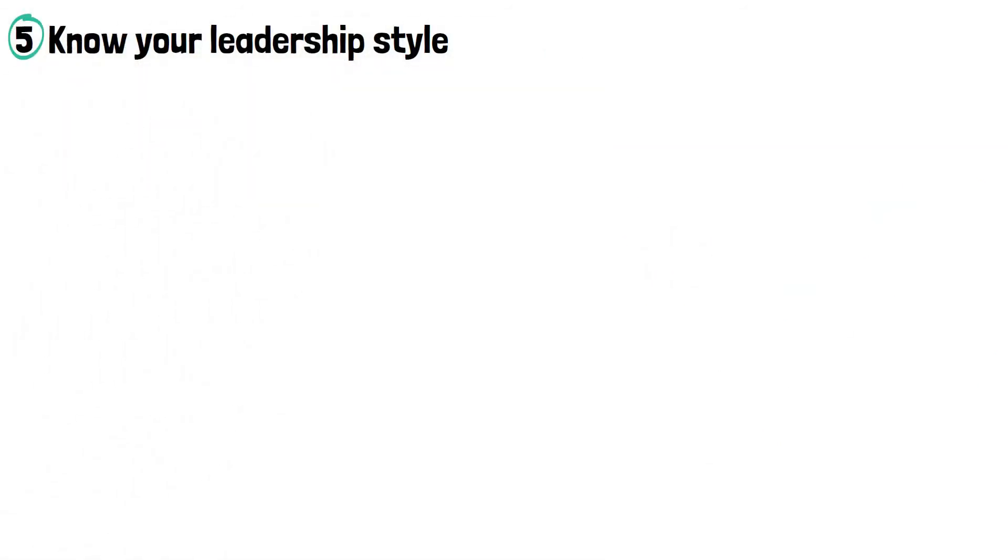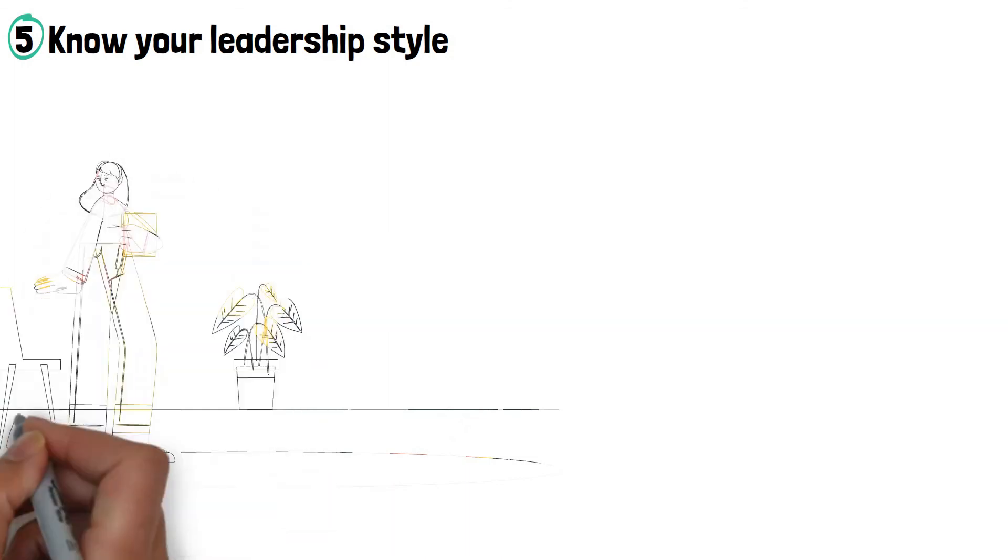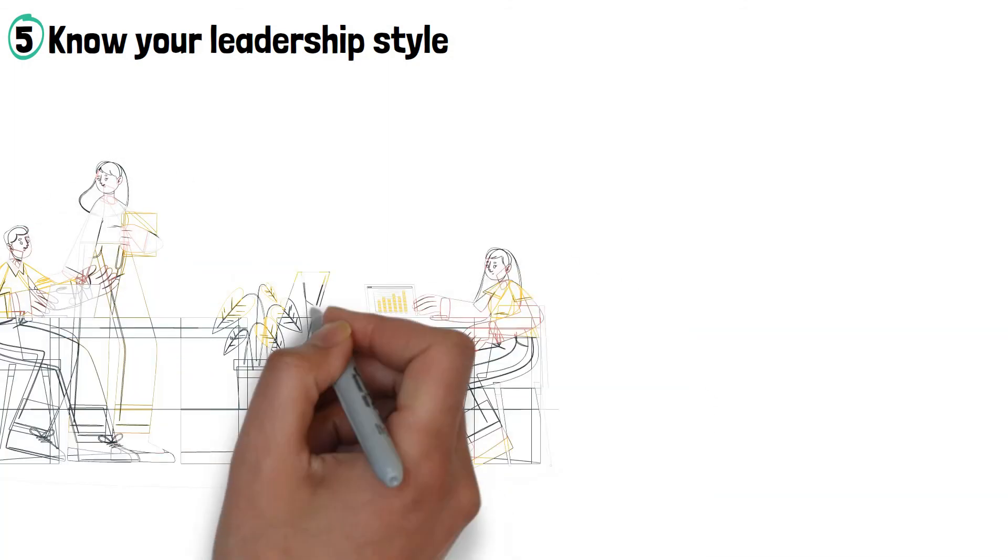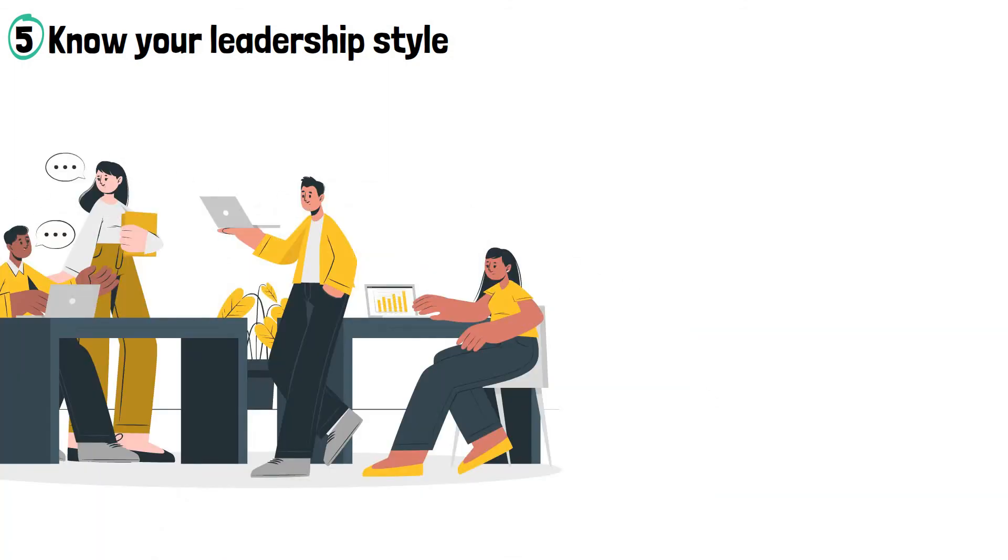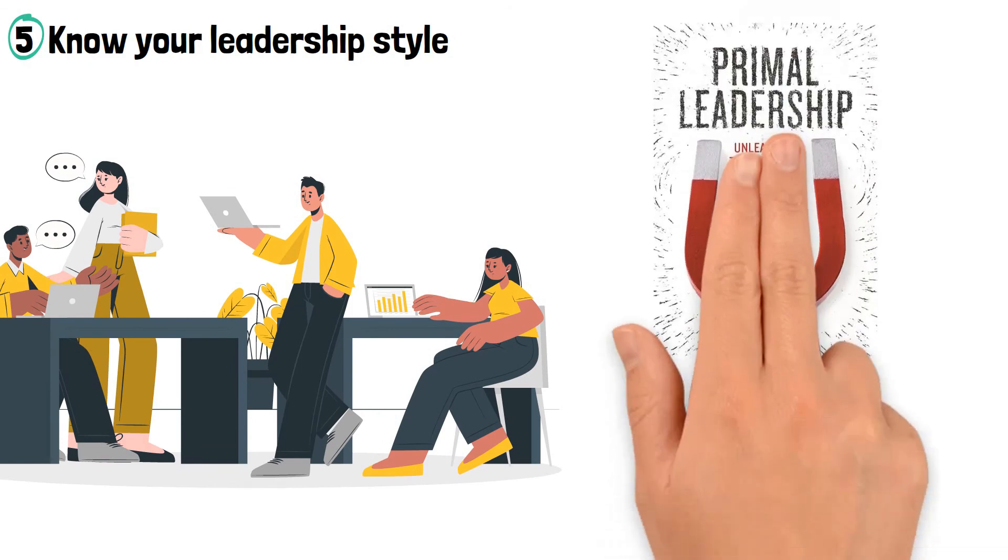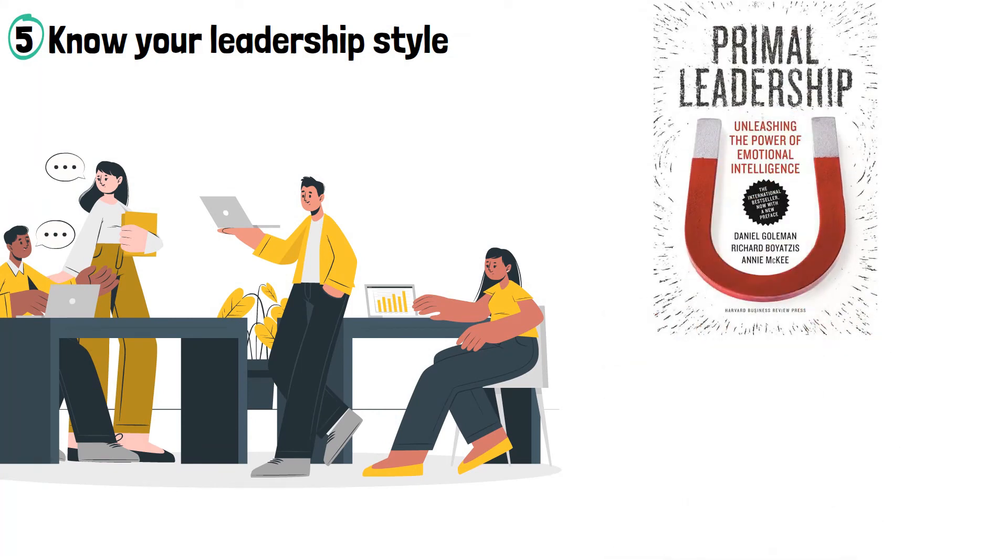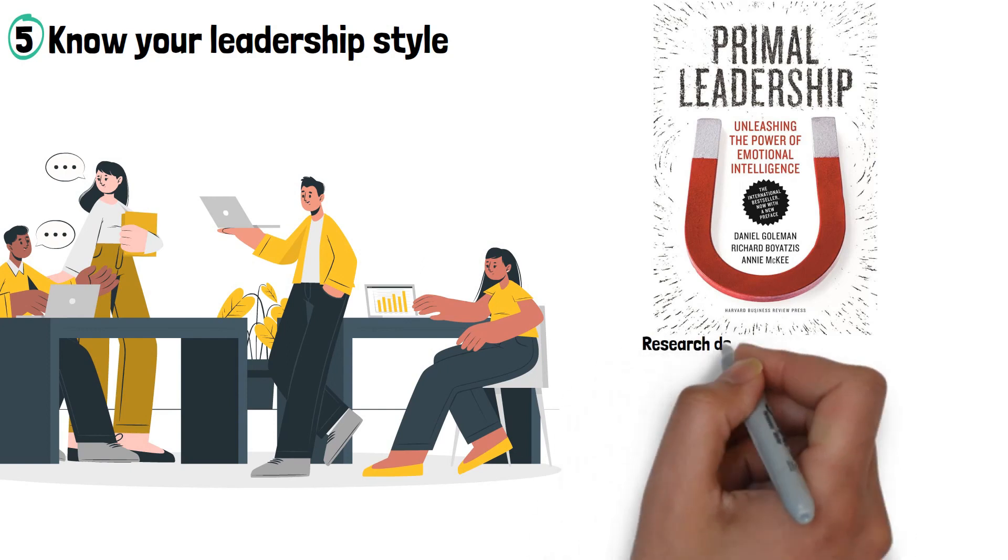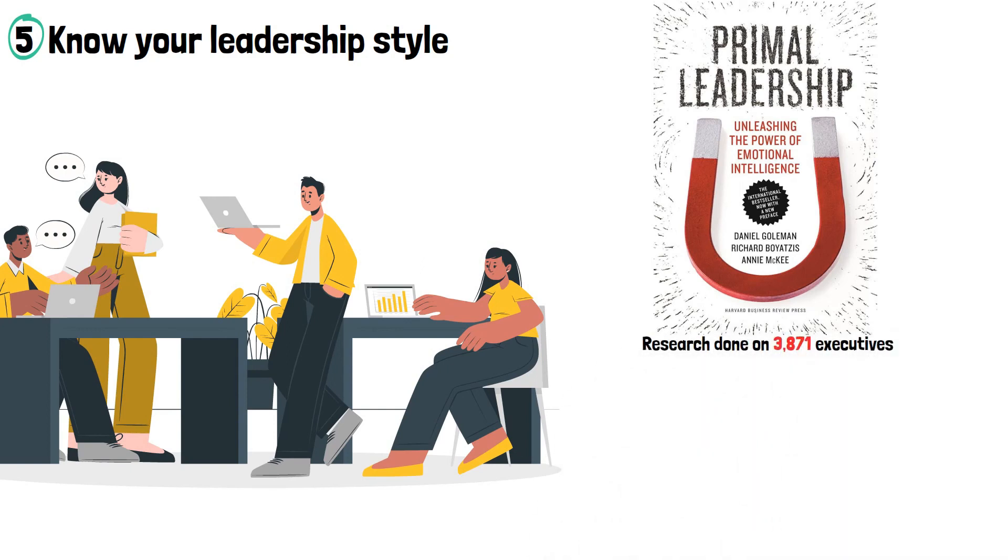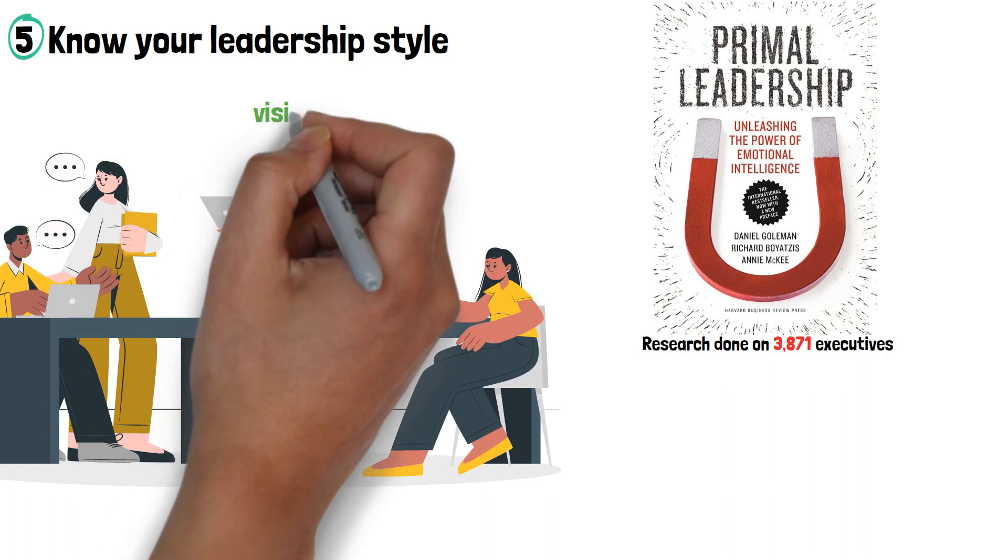Number five: Know your leadership style. The best leaders are often aware of their leadership style. According to Daniel Goleman, author of the book Primal Leadership, there are six styles of leadership extracted from a research done on 3,871 executives.